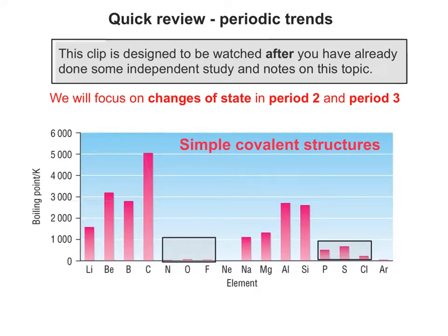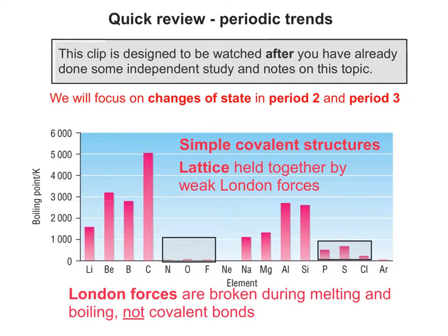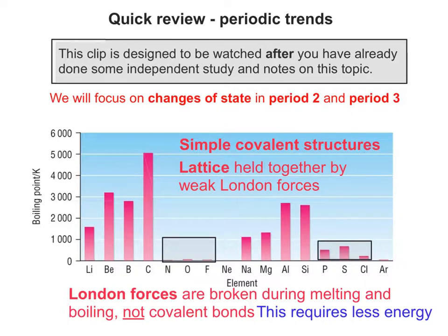The elements highlighted now — nitrogen, oxygen and fluorine, then phosphorus, sulphur and chlorine — are called simple covalent structures. The lattice is held together by weak London forces, so it's London forces that are broken during melting and boiling, not covalent bonds. As a result, this requires less energy to achieve.